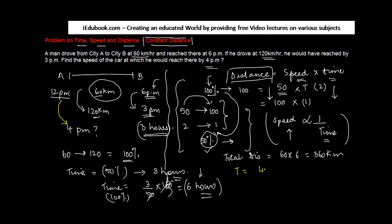So the time now is four hours, distance is 360 kilometers, time is four hours. What stops you from finding the speed? Speed is equal to distance upon time, or 360 upon 4, 90 kilometers an hour. So the speed of the car at which he would reach by 4 pm is 90 kilometers an hour.